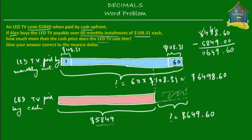So how much more than the cash price did the LED TV cost Alex? Well, it cost $649.60 more. Now, that's not the end of it. What we have to find out now is we have to give our answer correct to the nearest dollar. Now giving the answer correct to the nearest dollar means rounding it off to the nearest dollar.